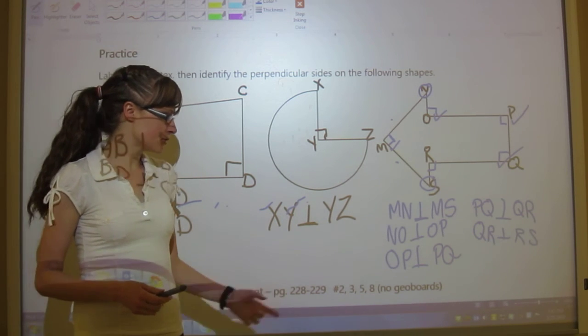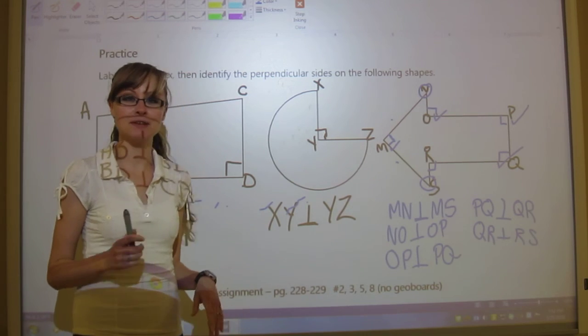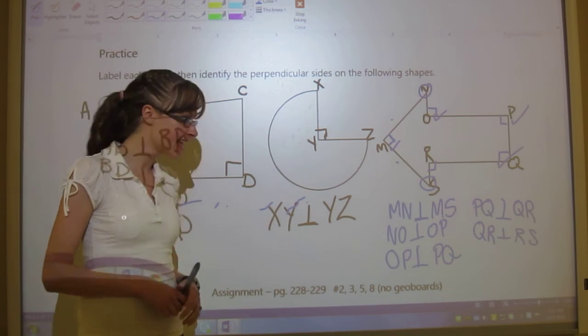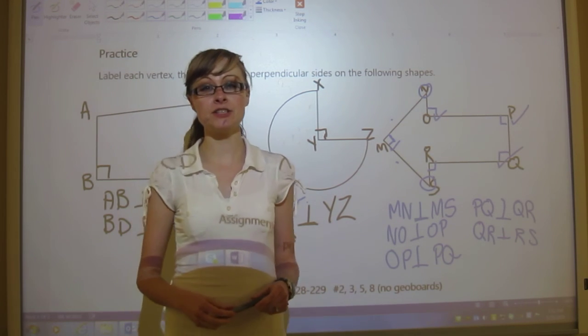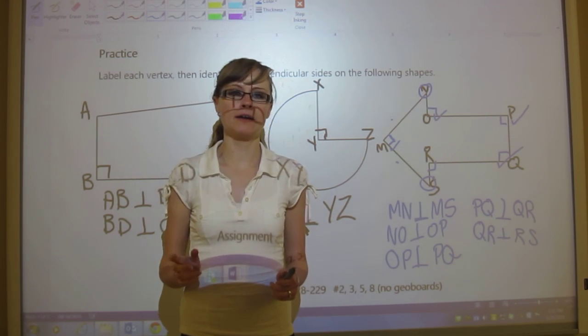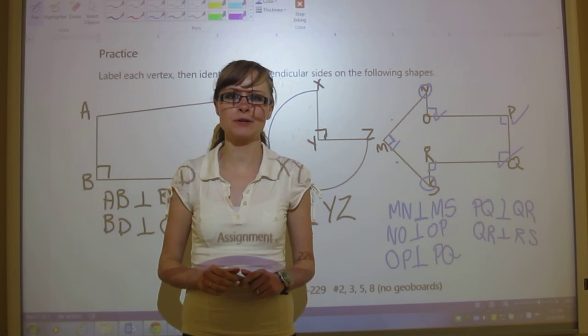Your assignment is page 228 to 229. Sorry, let me try that again. Page 228 to 229. And it's numbers 2, 3, 5, and 8. And for 8 we don't have any geoboards pulled out, so try that question without geoboards. You should be able to.